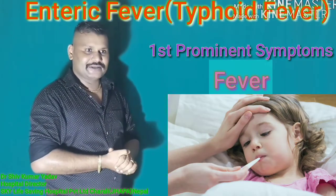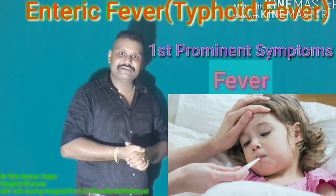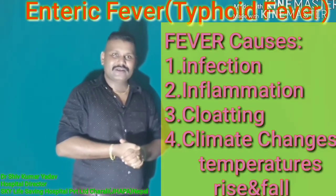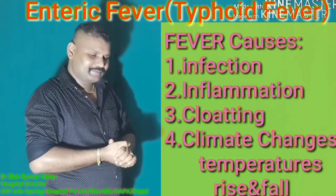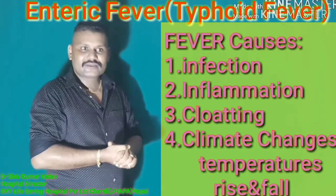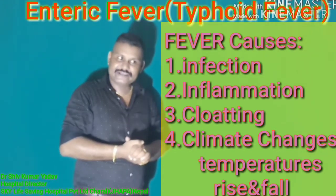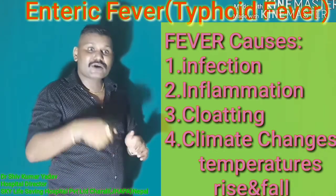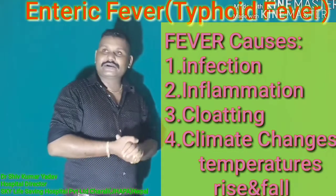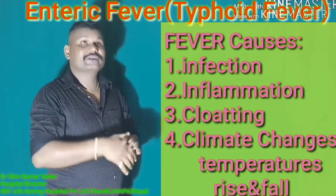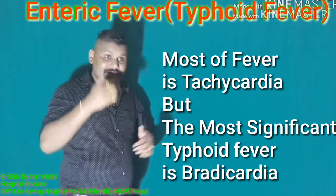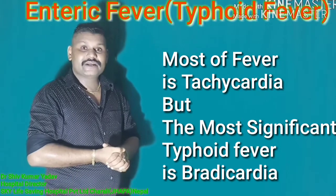The first prominent symptom is fever — a rise in temperature more than 37.4 degrees Celsius. In every fever there is tachycardia, but in case of enteric fever it's bradycardia. Normal pulse rate is 60 to 100 beats per minute. More than 100 is tachycardia; less than 60 is bradycardia.